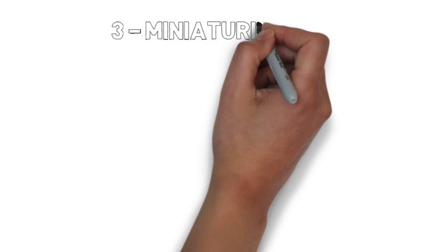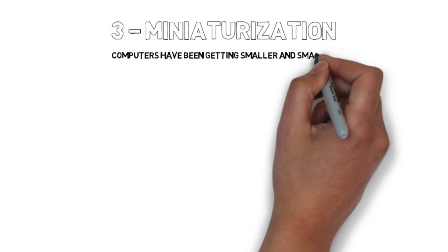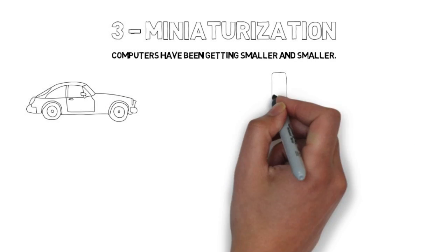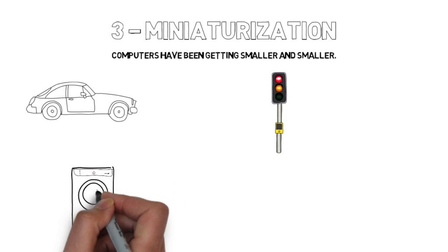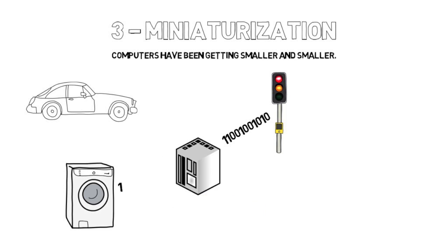Three: miniaturization. Computers have been getting smaller and smaller. Cars, traffic lights, highways, even home appliances talk to each other and to centralized servers to make our lives safer and more convenient.